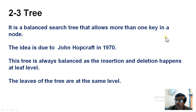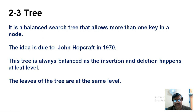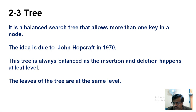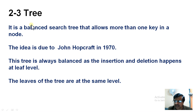A 2-3 tree allows more than one key in a node. Any 2-3 tree is already balanced — there is no separate balancing act required. By nature they are balanced, because insertion of elements happens at the very leaf level itself.